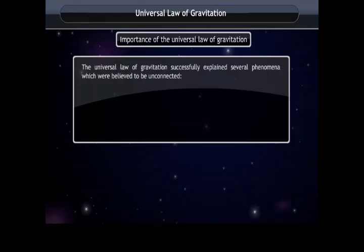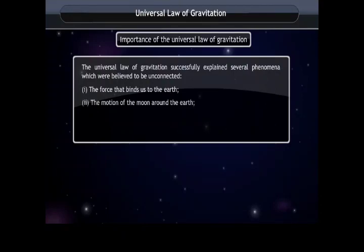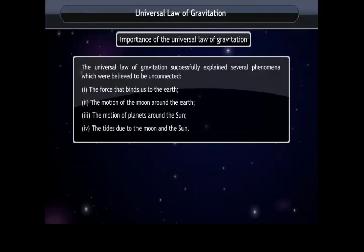The universal law of gravitation successfully explained several phenomena which were believed to be unconnected: first, the force that binds us to the Earth; second, the motion of the Moon around the Earth; third, the motion of planets around the Sun; and fourth, the tides due to the Moon and the Sun.